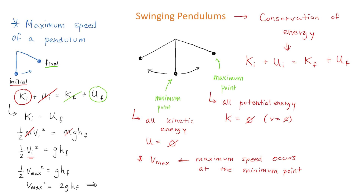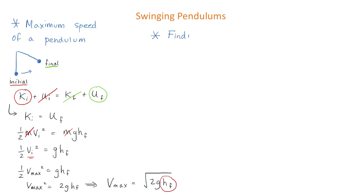We can now rearrange this equation and isolate for maximum speed. That leaves us with the equation: maximum speed equals the square root of 2gh_f, where g is the acceleration due to gravity and h_f is the final height of the pendulum. But what is h_f? How do we find the height a pendulum will reach when it swings to the right or the left? We can figure that out using some trigonometry.